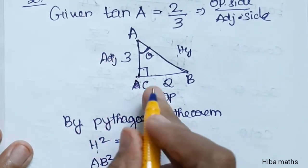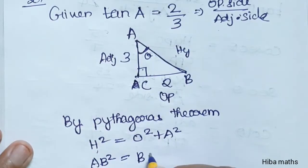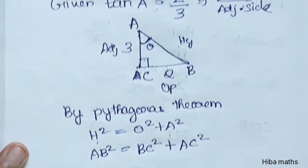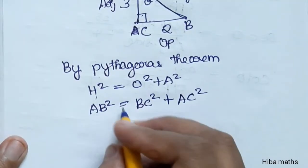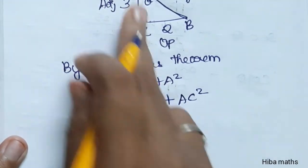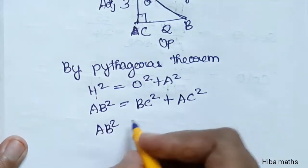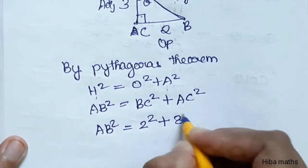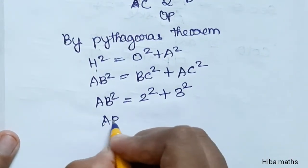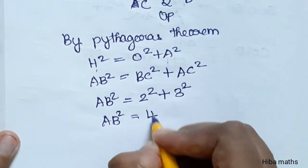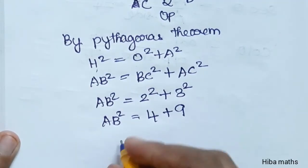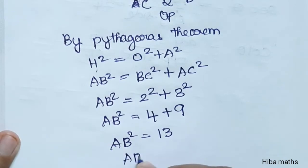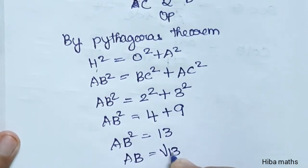AB squared is equal to BC squared plus AC squared. BC squared is equal to 2 squared, and AC squared is equal to 3 squared. So AB squared is equal to 4 plus 9, which equals 13. Therefore AB is equal to root of 13.